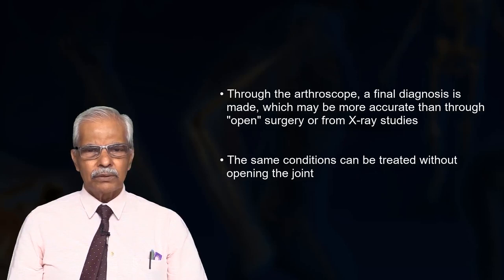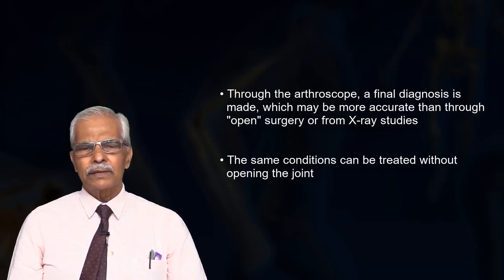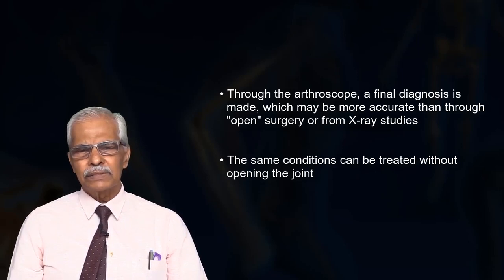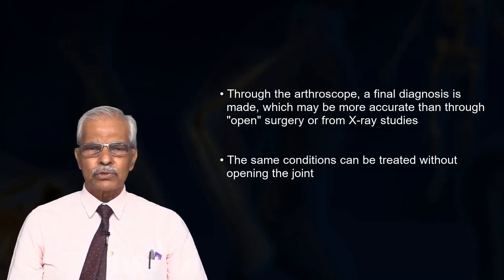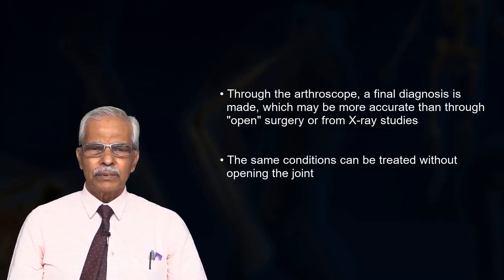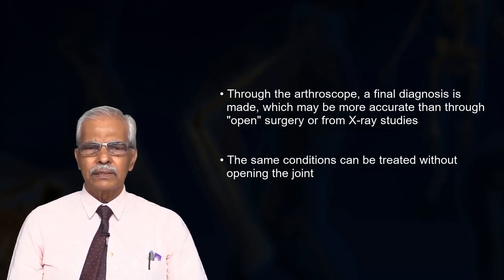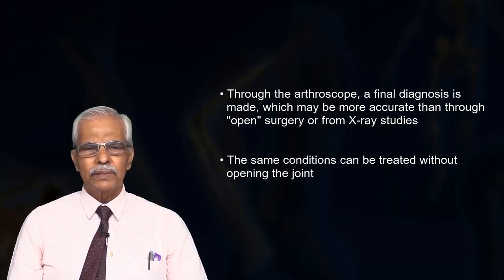For example, you'll be aware that in the knee, right at the back, even if you do a huge arthrotomy, you cannot see at the back. But through the scope, you can see the posterior compartment, posteromedial, posterolateral compartment, and do the surgery — ligament reconstruction, PCL, etc. Take out a loose body, and other surgeries are possible through the scope. The same conditions can also be treated without opening the joint.